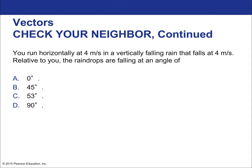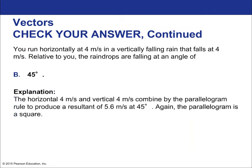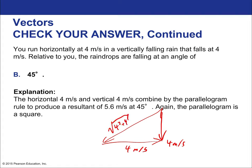You run horizontally at 4 meters per second in vertically falling rain that falls at 4 meters per second. Relative to you, the raindrops fall at 45 degrees — because both velocities are equal, the sides of the triangle are equal. The speed of rain relative to you is the square root of 4² + 4², which equals the square root of 32, approximately 5.6 meters per second.